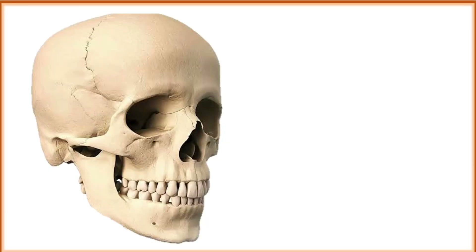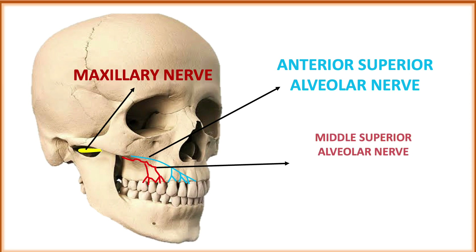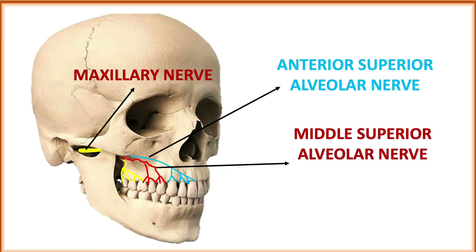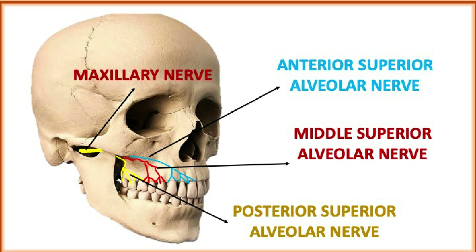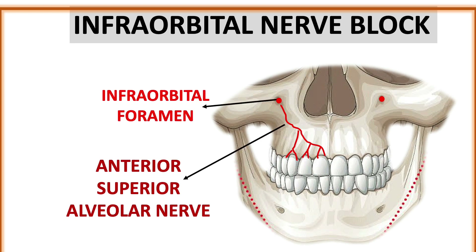Looking at the figure, the maxillary nerve is divided into three branches: the anterior superior alveolar nerve, the middle superior alveolar nerve, and the posterior superior nerve. In the infraorbital nerve block, we anesthetize the anterior superior alveolar nerve — that is why it is also called the ASA nerve block. The infraorbital foramen, shown as a red dot in the figure, is where the anterior superior alveolar nerve exits, anesthetizing dentition from the central incisor to the premolar, but only the buccal area.